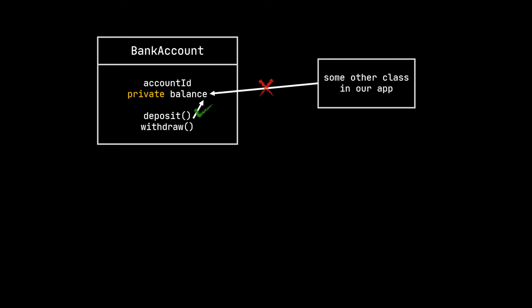So in our class, only the deposit and withdraw methods can access the balance attribute. Methods can also be made private, so if we were to create an applyInterest method with private access, this method will only be accessible by the deposit and withdraw methods of our class and won't be accessible by other parts of our application.